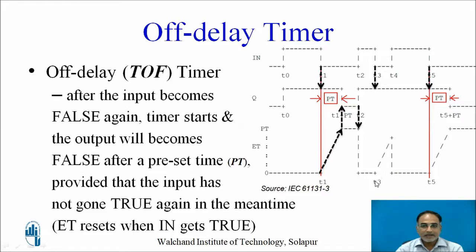At t3, the timer starts and ET value starts incrementing towards PT, but at t4 the input changes from 0 to 1 again and ET resets to 0. Because of this, the change in input is not reflected on the output waveform — you have missed this change in input on the output waveform.